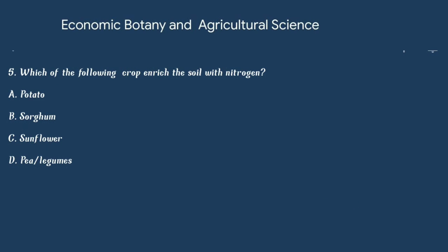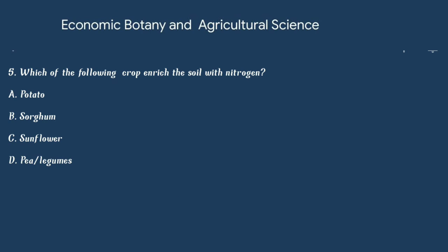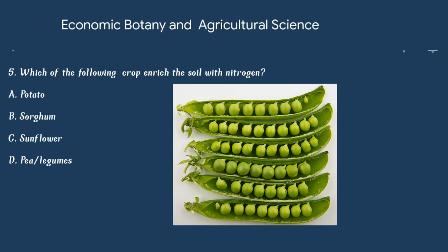Question number 5. Which of the following crop enriches the soil with nitrogen? Option A: Potato. Option B: Sorghum. Option C: Sunflower. Or option D: Pea or legumes. The answer is option D: Pea or legumes.